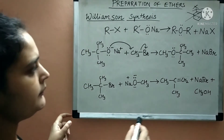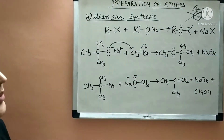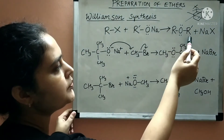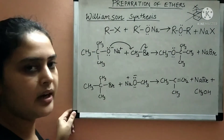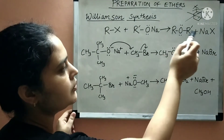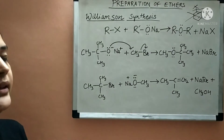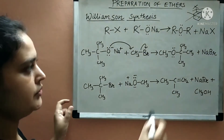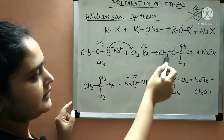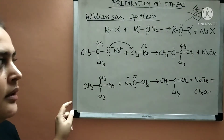That is why we can form either symmetrical or unsymmetrical ethers. Symmetrical ether means both alkyl groups attached to the oxygen atom are the same. When both alkyl groups on the oxygen atom are different, it is an unsymmetrical ether. In our example, the left side has a methyl group and the right side has a tertiary butyl group, so it is unsymmetrical.